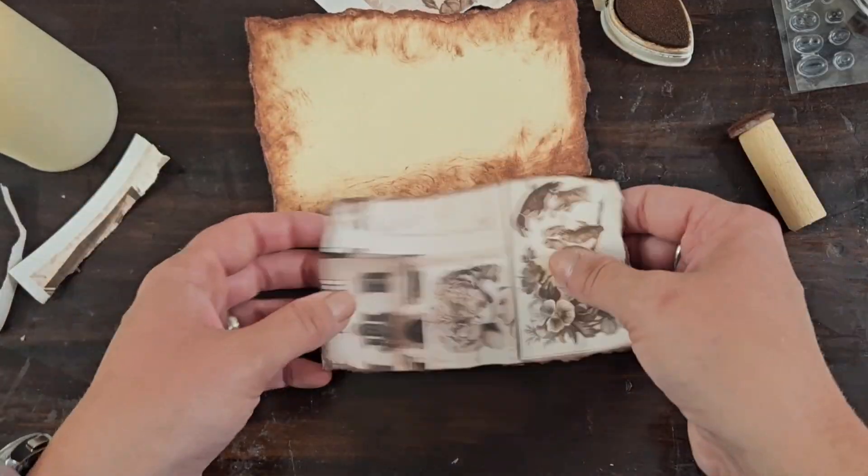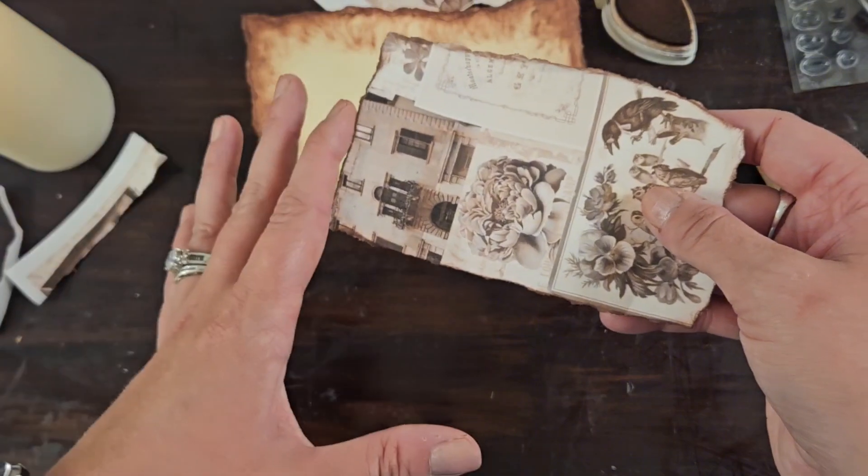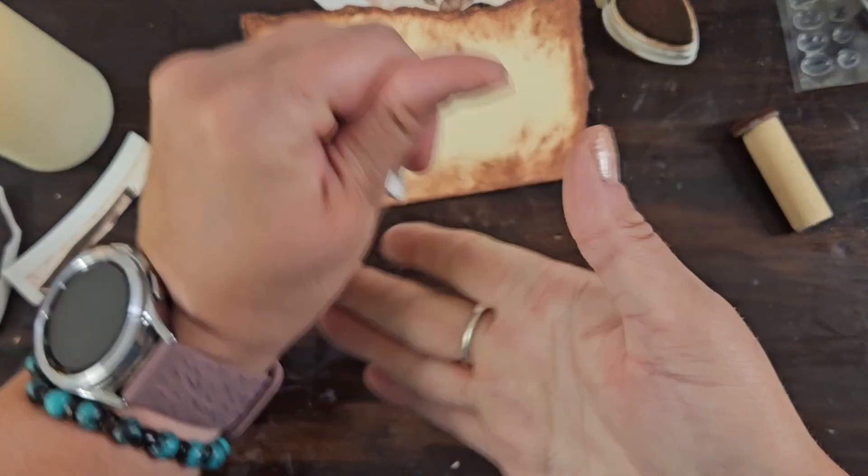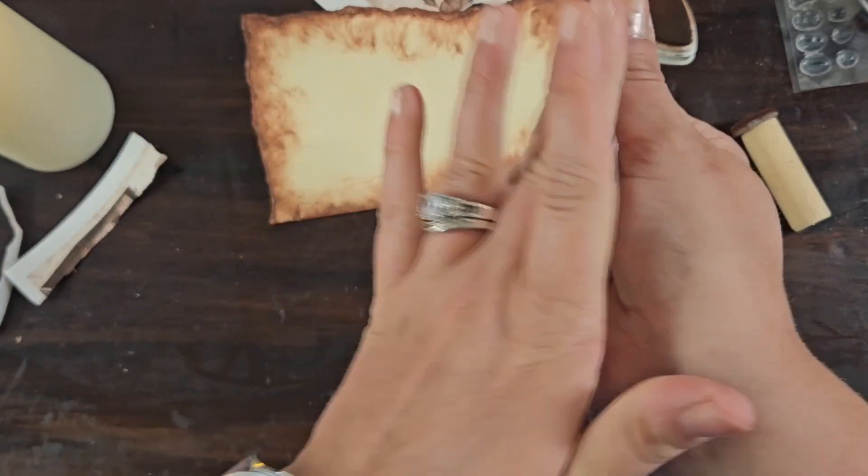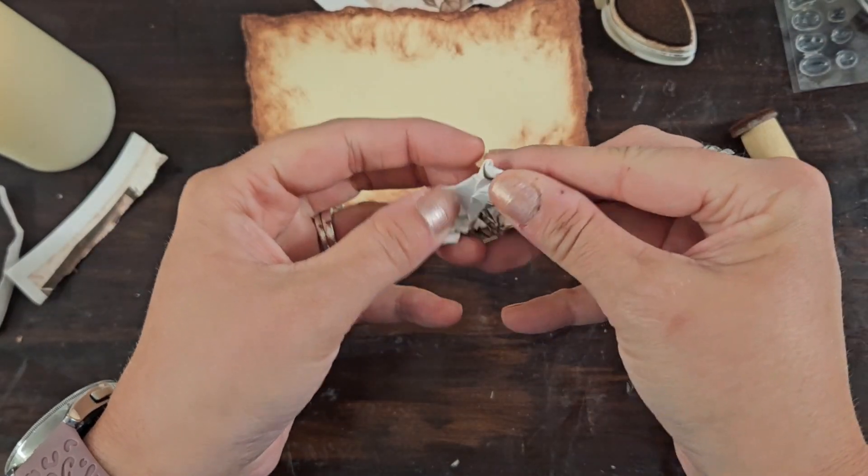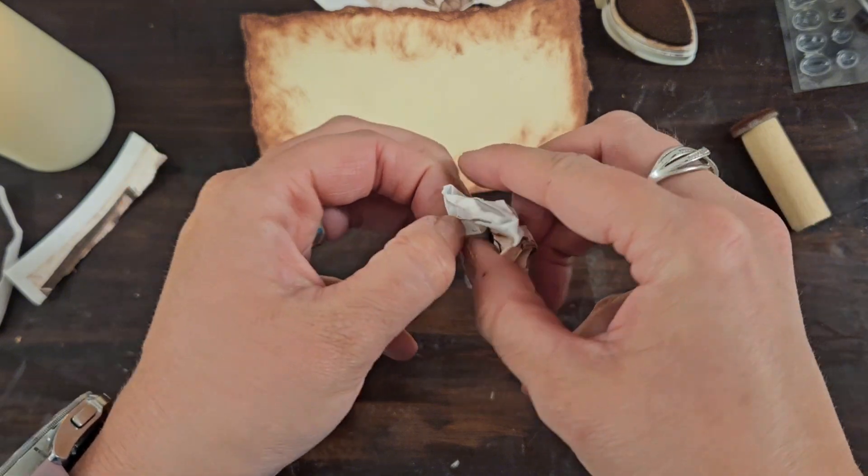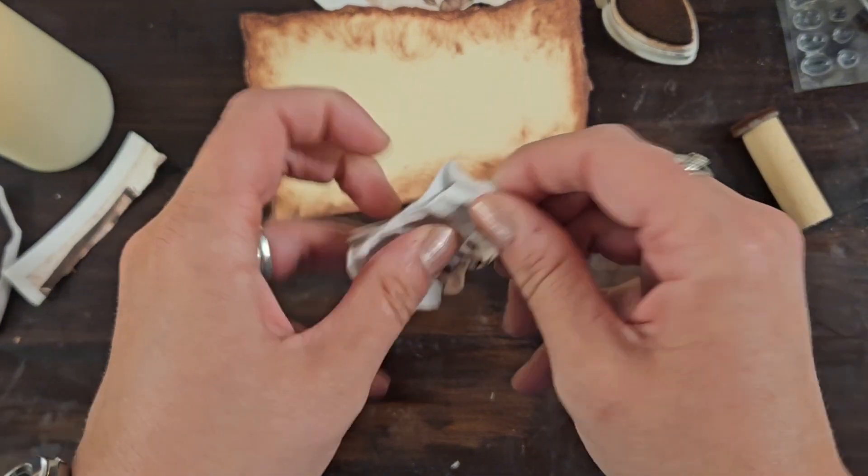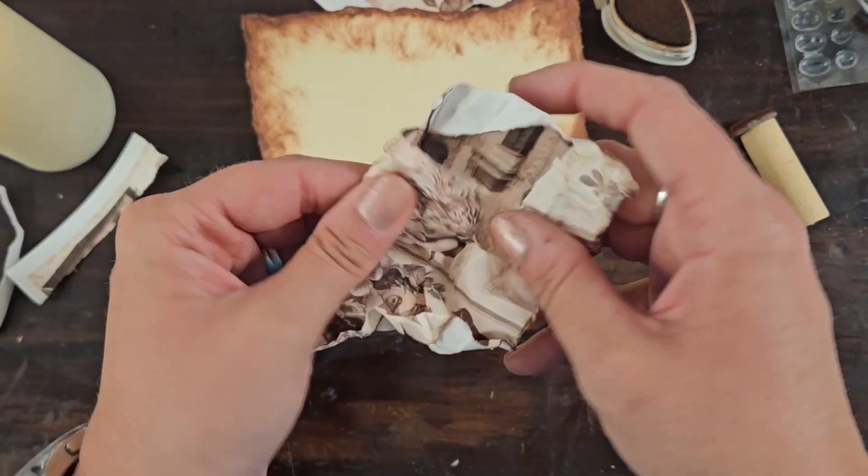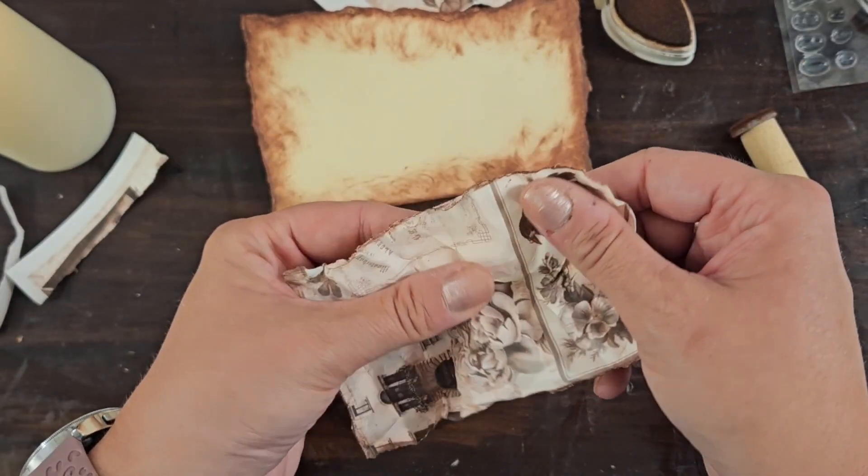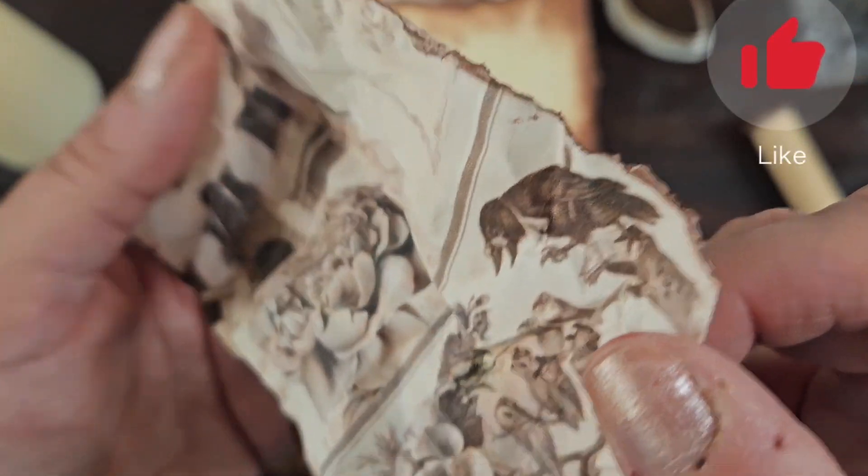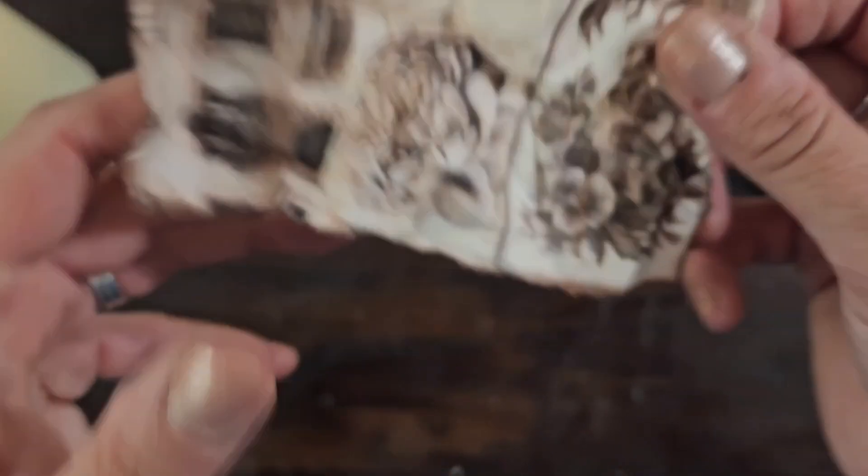I'm actually going to crumble it up and make it hopefully look more aged and worn and weathered. So if you've never done this, you're probably thinking, Oh my God, what is she doing? But once you unfold it and then you go over it with your ink, it gives you, see how they have the indents and then the raised parts.